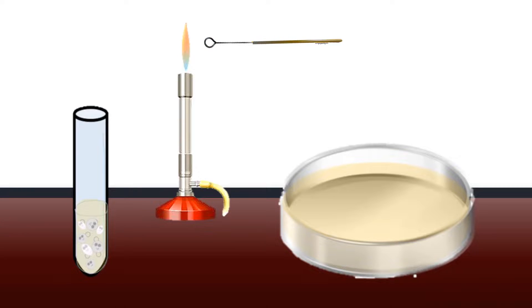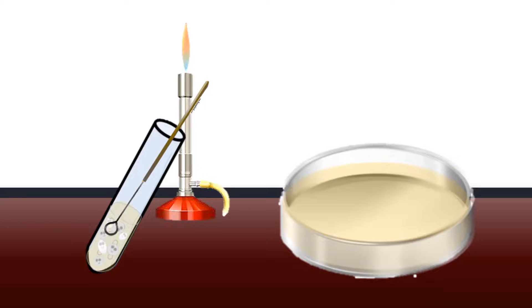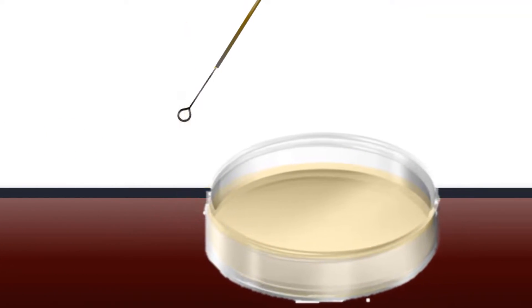Here is an example of the streak plate method. In this technique, a sterile inoculation loop is used to spread an inoculum across the surface of an agar plate.